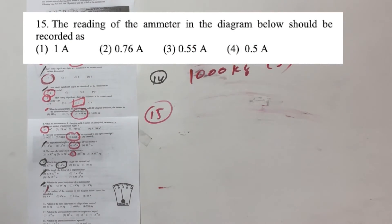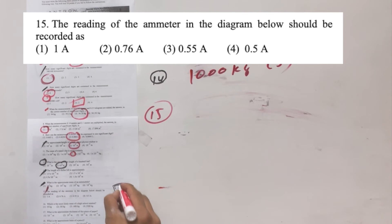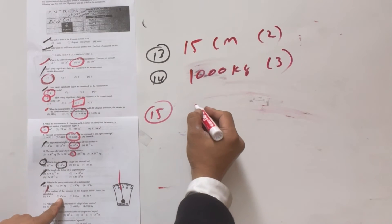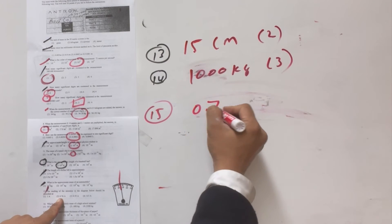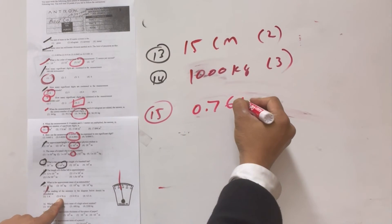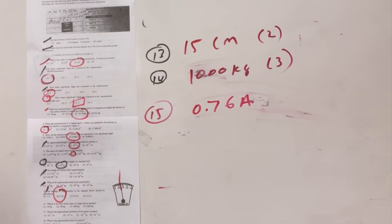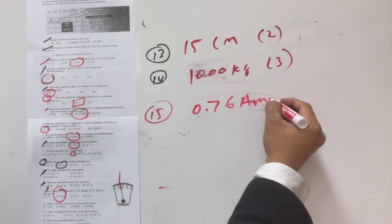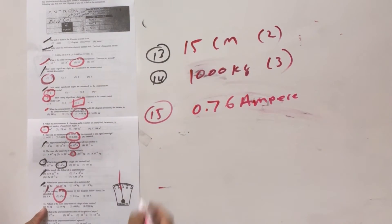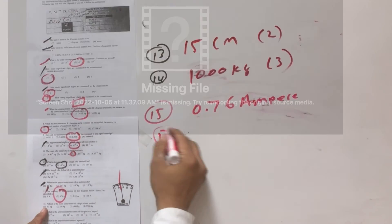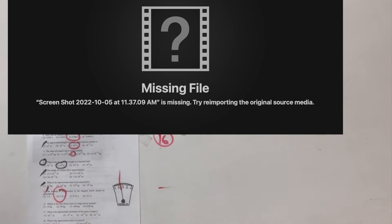Number fifteen: the reading of the instrument shown. The value is close to 0.76.